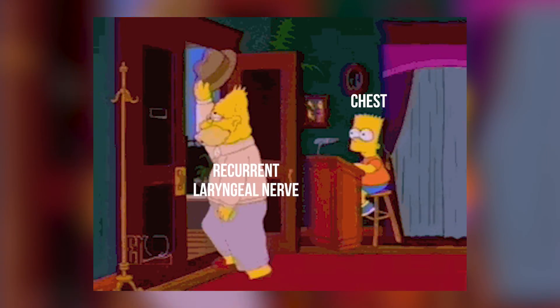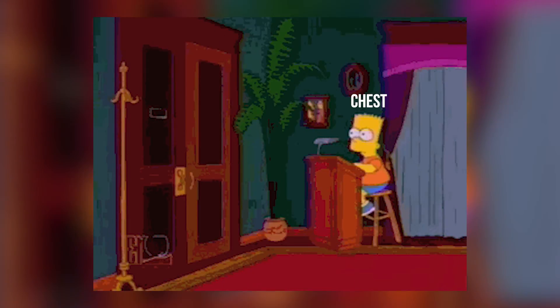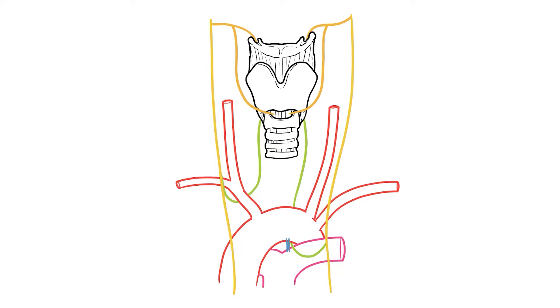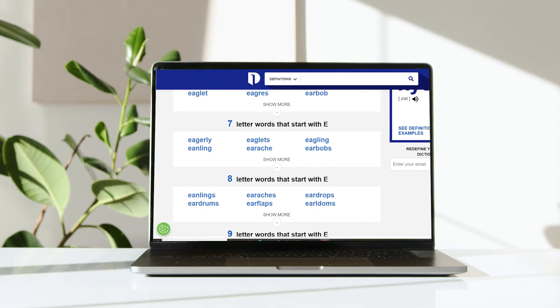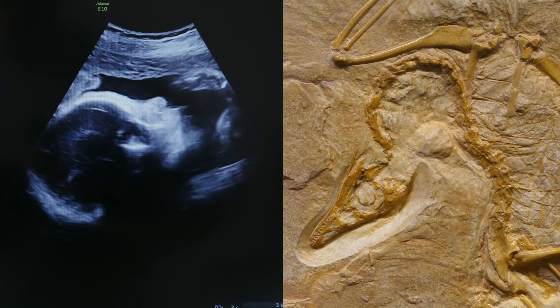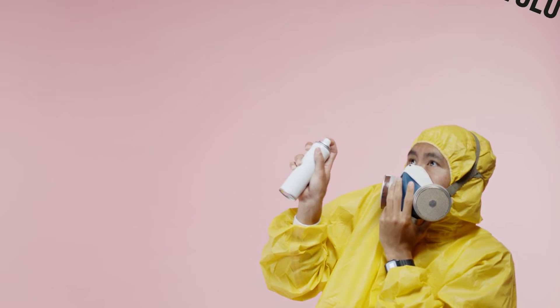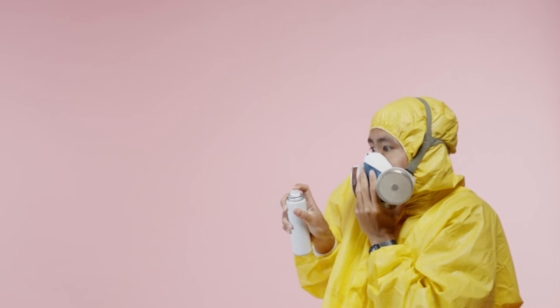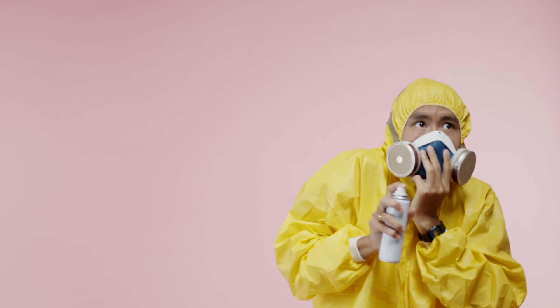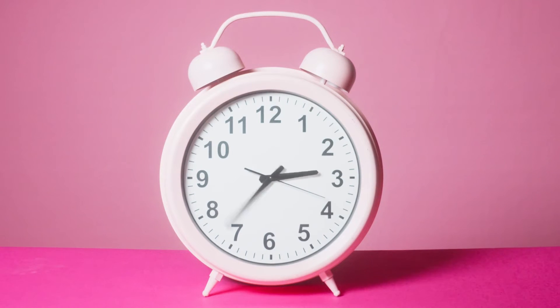We've now drawn the nerves that innervate the larynx, but it may have left you with a question. We've seen how those recurrent branches head into the chest, but why do they take this route? Surely there are easier ways to reach the larynx? Well the answer lies with everyone's favourite pair of e-words: embryology and evolution. If you're not a fan of either topic, feel free to skip this chapter, but if you want to find out more then join me for a delve into our developmental history.